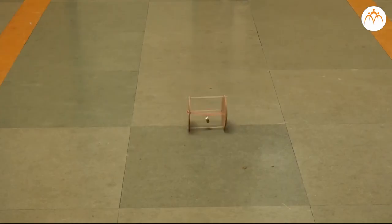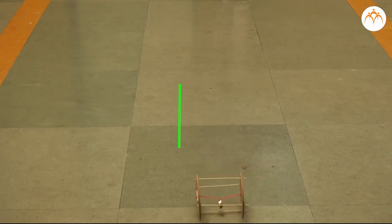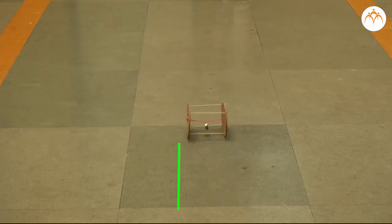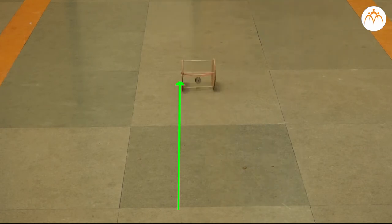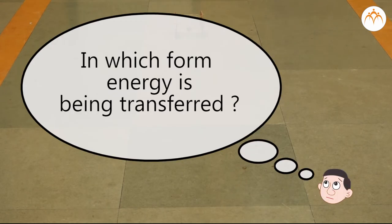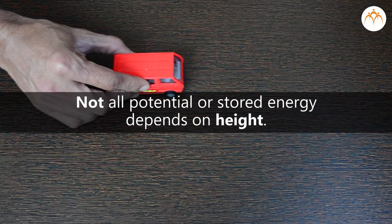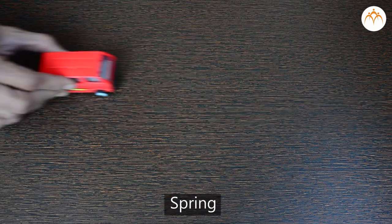We will place a rubber band attached to the nut like this. Now roll the can by pushing it. Can you guess what will happen? It comes back again after it stops at the other end. Can you find out in which form energy is being transferred?